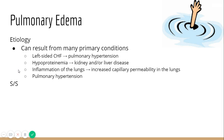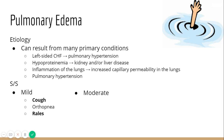Signs and symptoms depend on severity. With mild cases, patients will have a cough and orthopnea — when they lay back in a flat position they have more difficulty breathing, so they prefer to sleep sitting up slightly. They will also have rales, which are crackles within the lungs that you hear when you auscultate with a stethoscope.